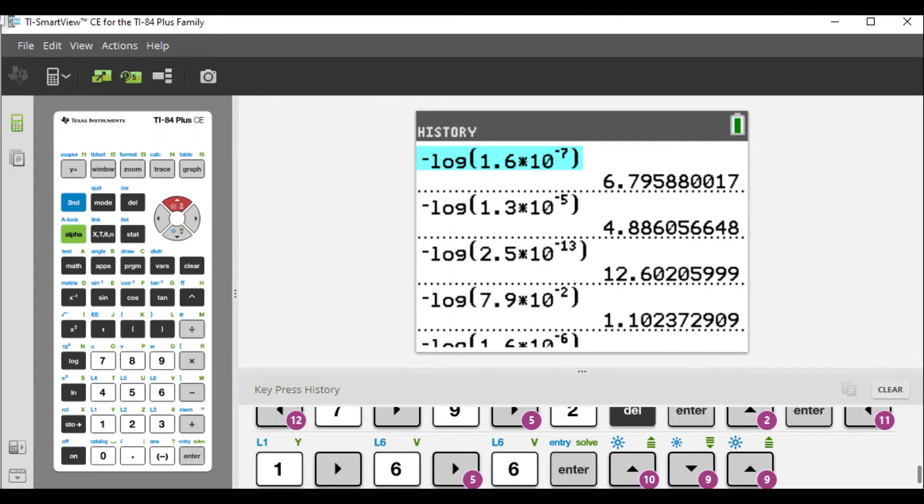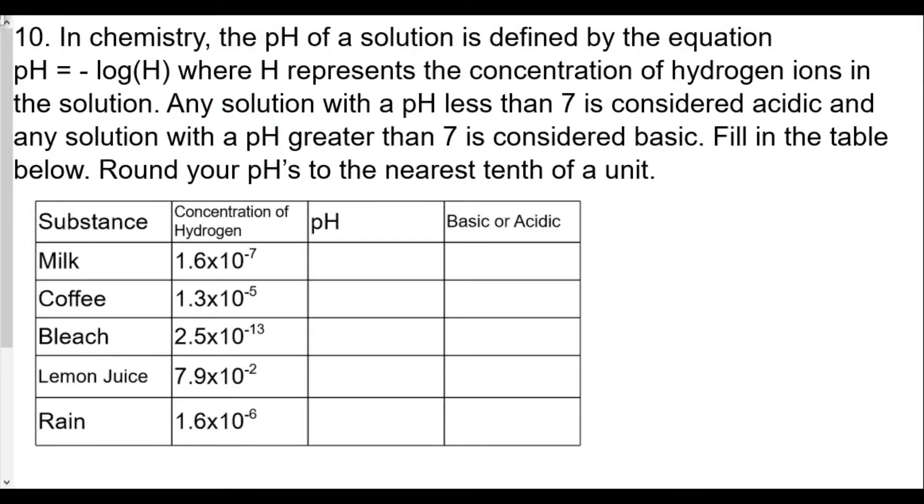So let's plug in the values. So our pH for milk would be 6.8. The pH for coffee was 4.9. The pH for bleach 12.6, very high. The pH for lemon juice 1.1, and the pH for rain, which is very close to water, is 5.8.